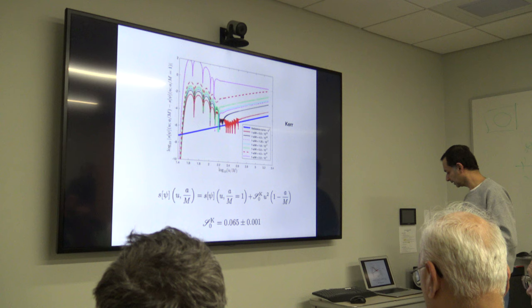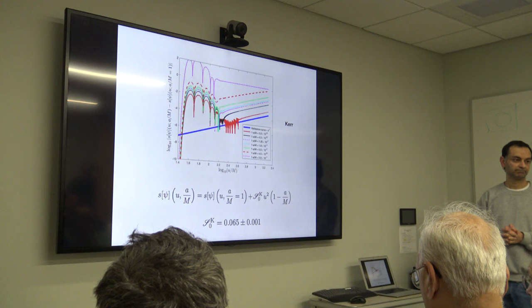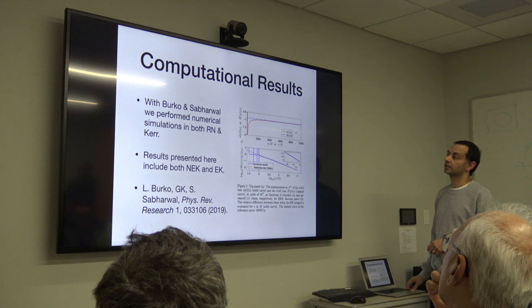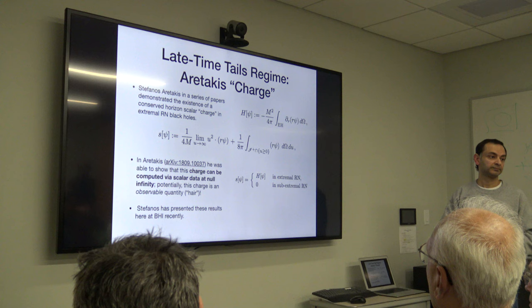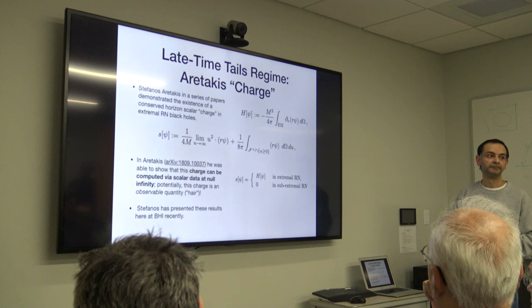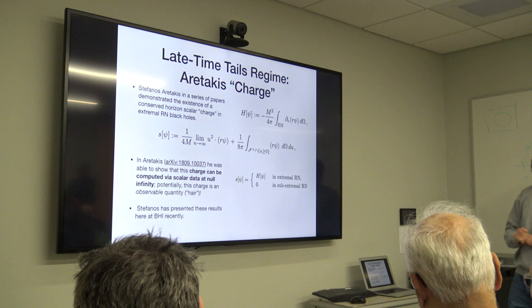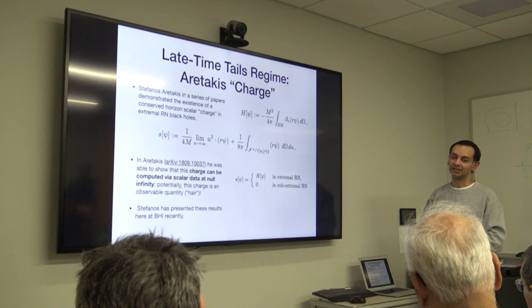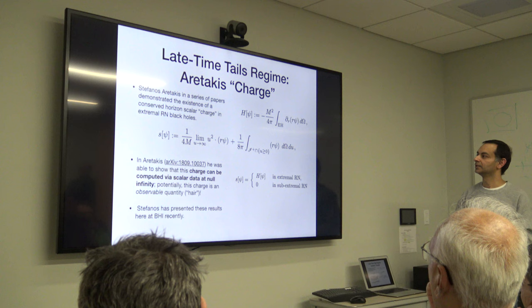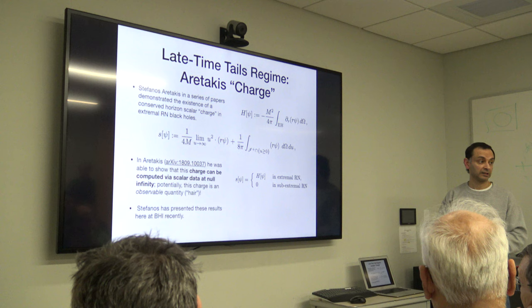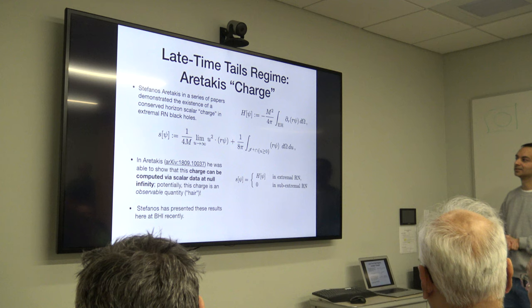In what sense is it a conserved charge? It's conserved in the sense that it stays constant - it doesn't change in time. It's evaluated on the event horizon, constant in the advanced time coordinate V. And it's only conserved in the extremal limit, right? Yes, that's right. And you can conserve it approximately for some time in the near-extremal phase. Is it analogous to electric charge? Not really - in the RN case that would be a separate parameter. In this case it's only conserved in the extremal limit. Intuitively what this means - I have no idea. You should ask Stefanos.